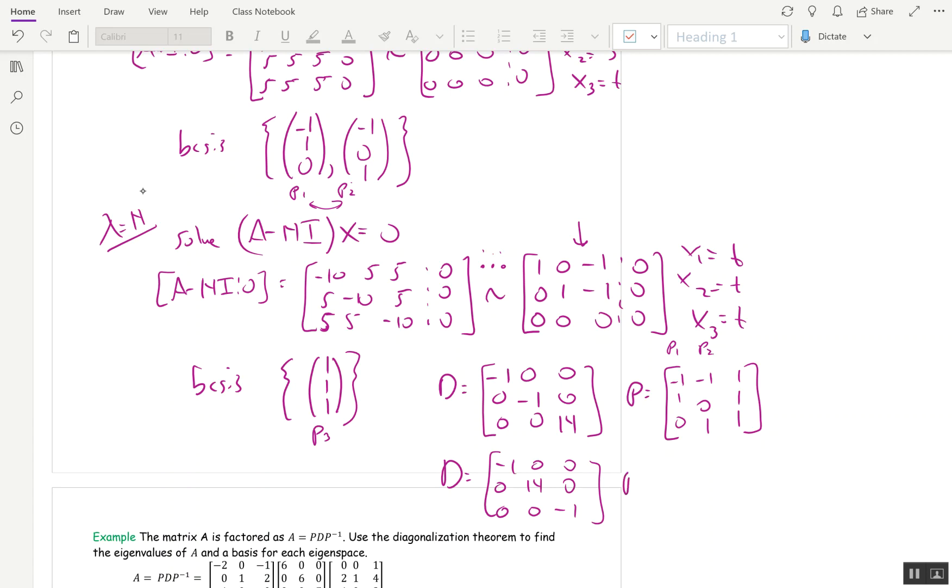Then my P would be, I'd need to move this third vector into the middle. And then it wouldn't matter. I could put P1 in first, negative 1, 1, 0, and P2 in third. Or I could put P2 in here. I could put P2 there and P1 there. I just have to match the order to D.